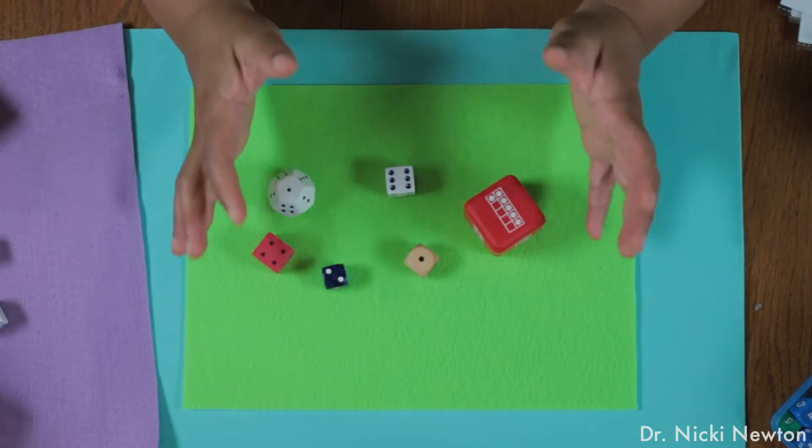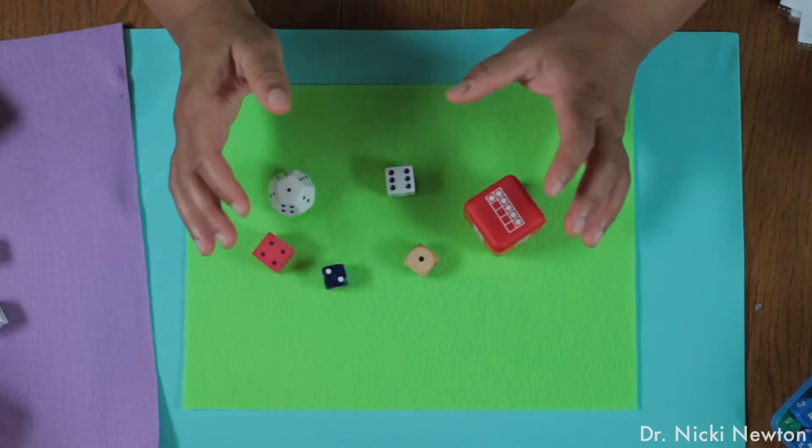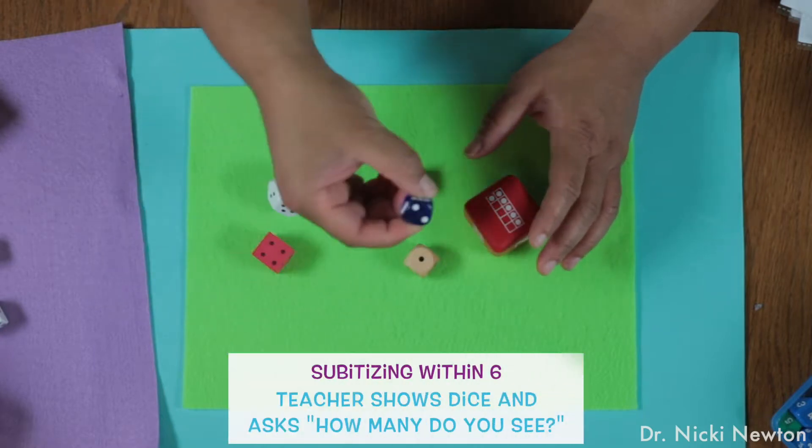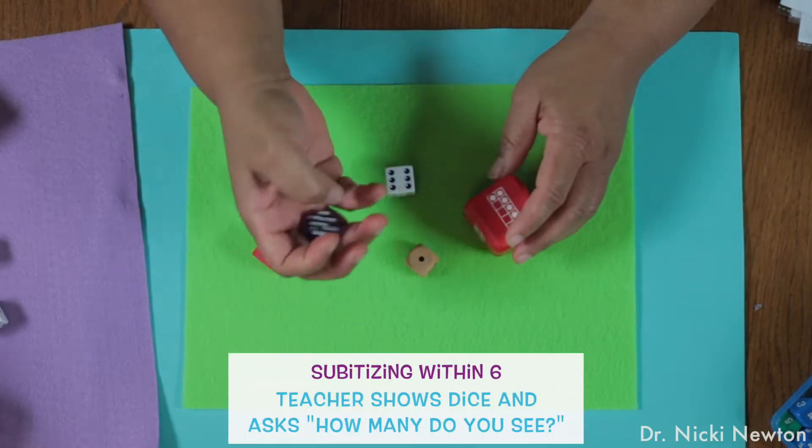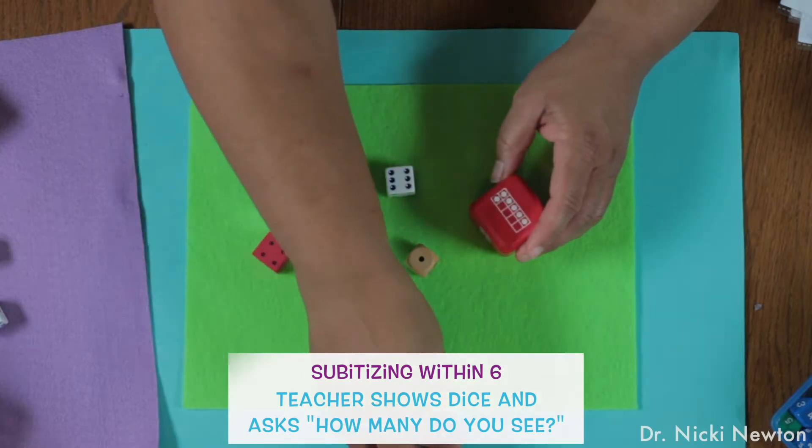There are five activities that I want to talk about. The first one is where the teacher shows the student the dice and says, how many do you see? And the student has to say.